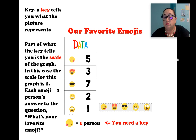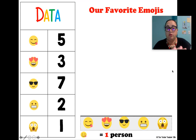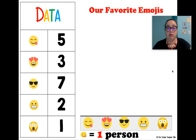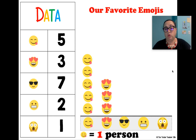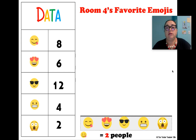So our favorite emojis — here we're going to fill in the graph using one picture equals one person or one response. The yummy emoji has five, and we're going to have five yummy faces. For the lovey face we have three. For the cool guy sunglasses, you're looking at your data table and you should see seven — put seven faces. Then there are two for the next one and one for the oh-my-gosh emoji.